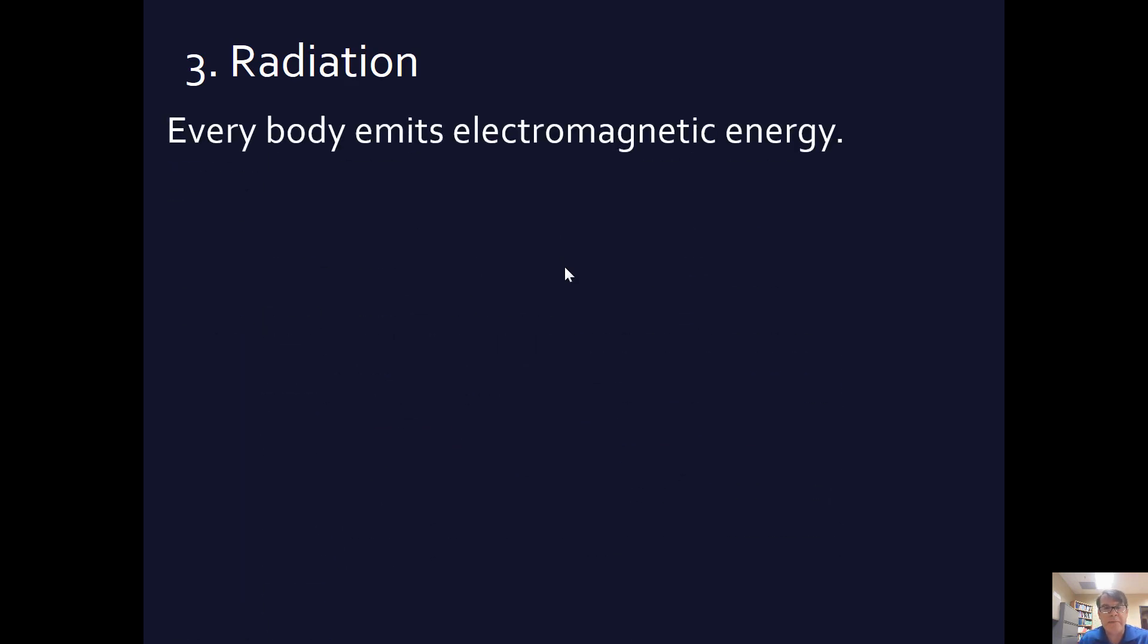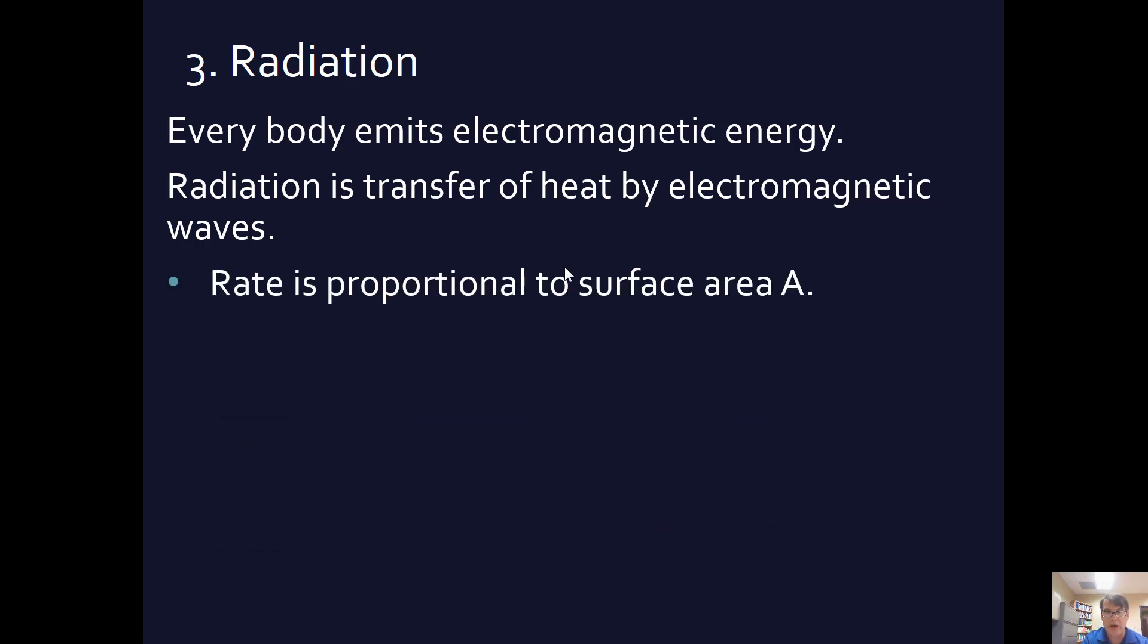Finally, radiation. Every body emits electromagnetic energy. I am, right now. This is how infrared scopes can tell where people are in a building. Radiation is the transfer of heat by electromagnetic waves. And, of course, electromagnetic waves go all the way from really slow waves, AM radio waves, to cosmic gamma rays and that sort of thing, where the frequency gets higher and higher and higher. So radiation is a transfer of heat by electromagnetic waves.